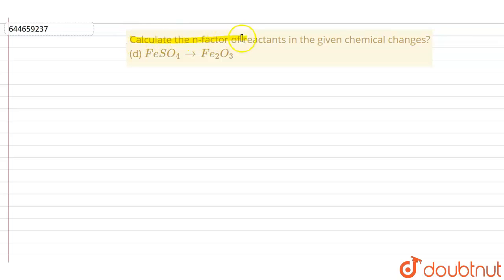The question is calculate the n factor of reactants in the given chemical changes. The given chemical change is FeSO4 changes to Fe2O3.